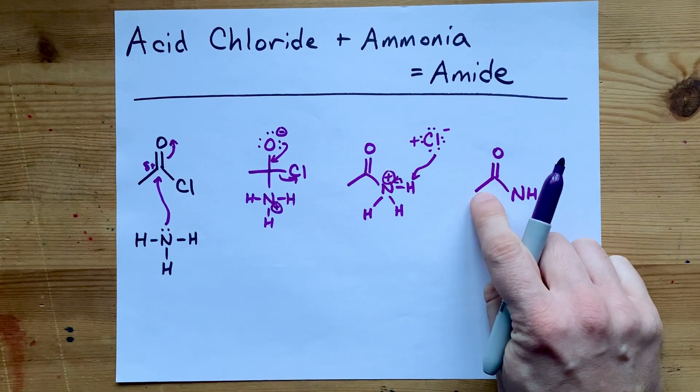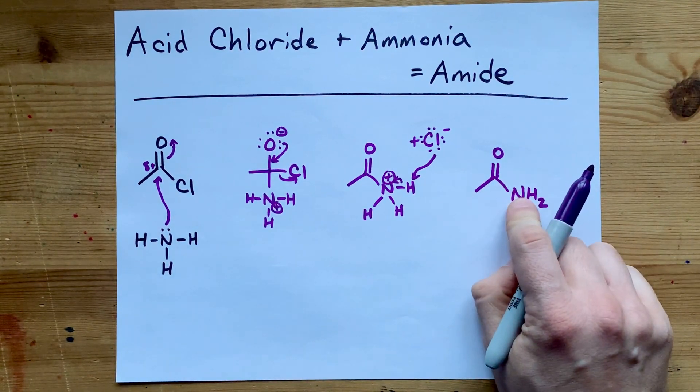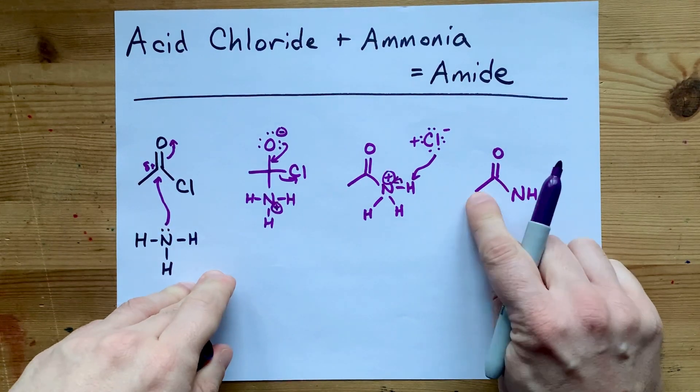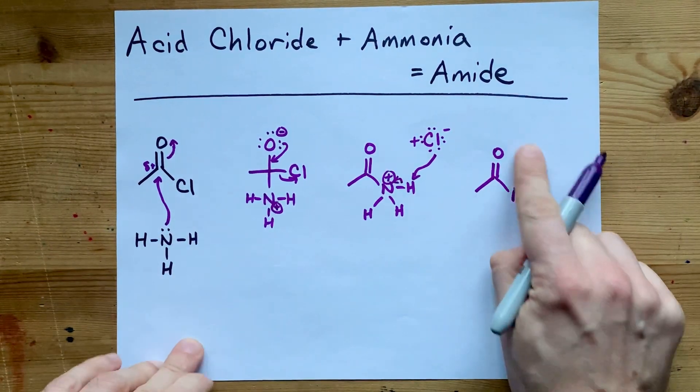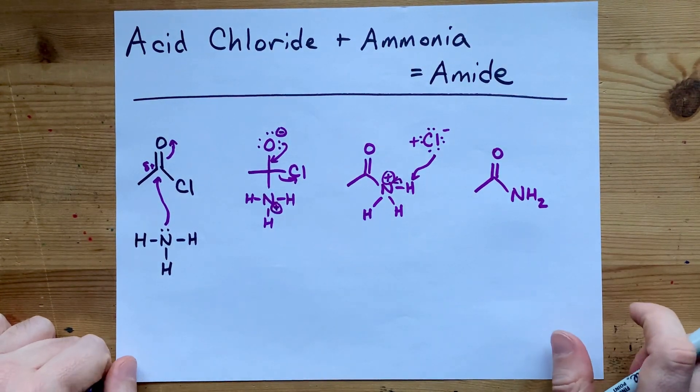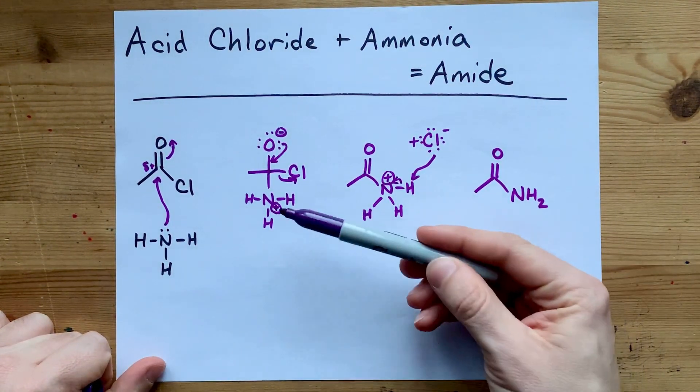Notice that the carbon chain length didn't change—from 2 carbons to 2 carbons. But now it's an amide: double bonded oxygen and N. This would have worked as well even if you had a couple carbon chains on nitrogen.